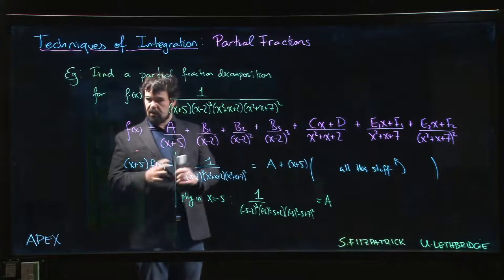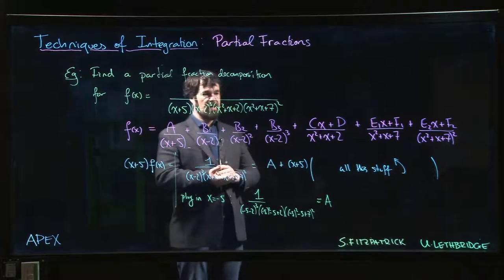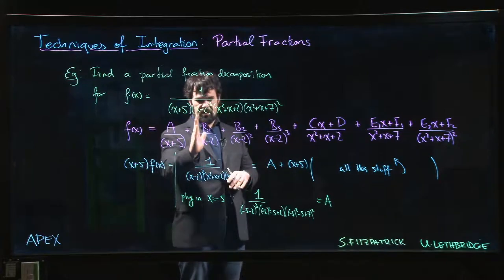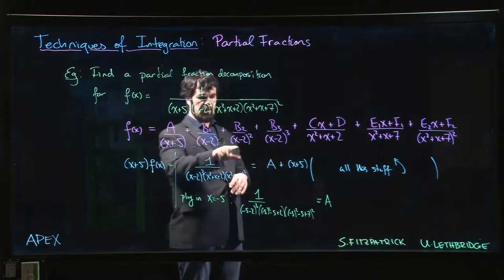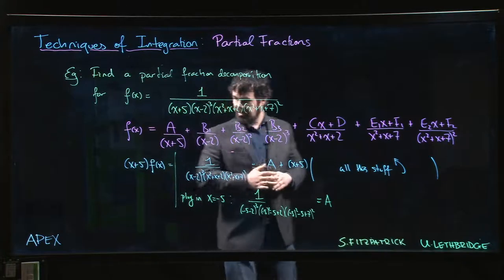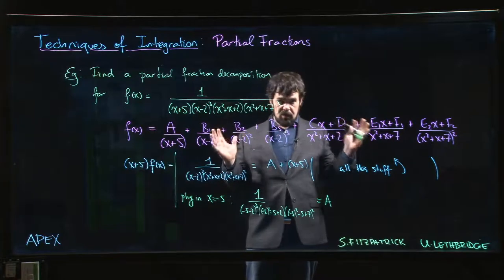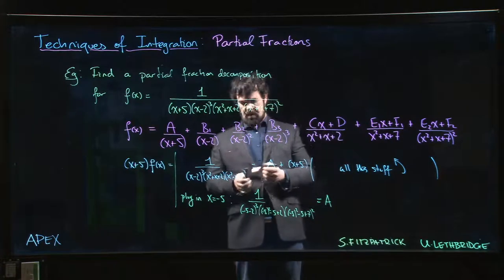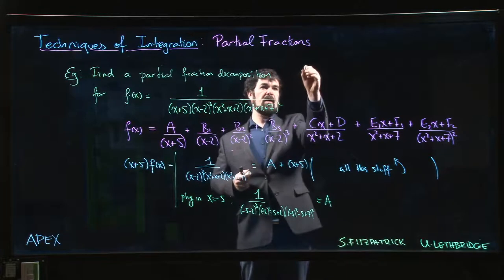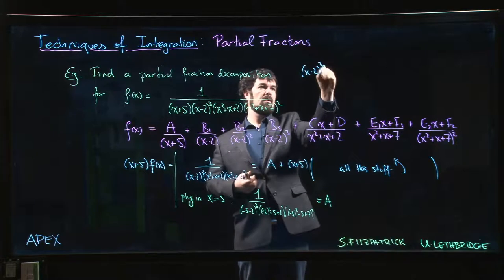But what I could do is I could multiply everything by, say, x minus 2 cubed. If I did that, if I said, hey, what's x minus 2 cubed times f of x—well, on the one hand it's going to be one over x plus 5, x squared plus x plus 2, x squared plus x plus 7, all squared. That part is gone.